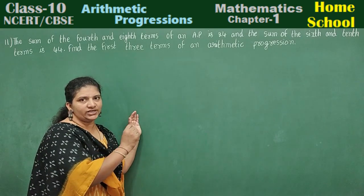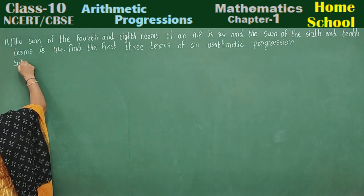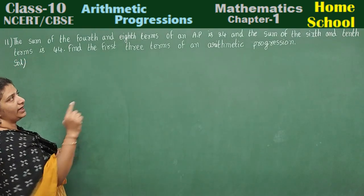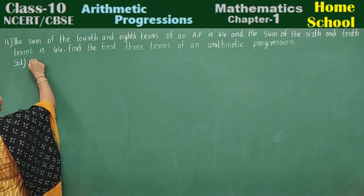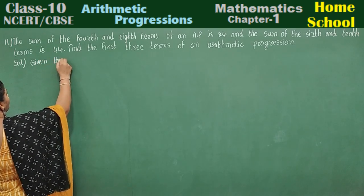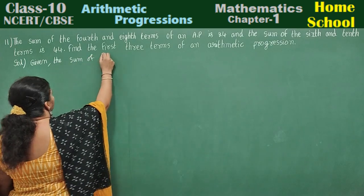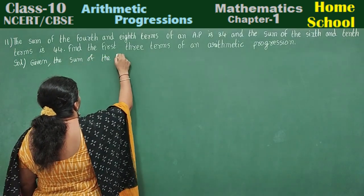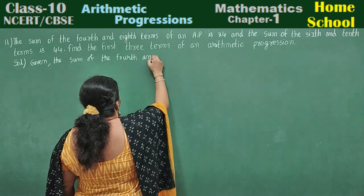Let us split the question and start the solution. Given: the sum of the fourth and eighth terms of an AP is 24.